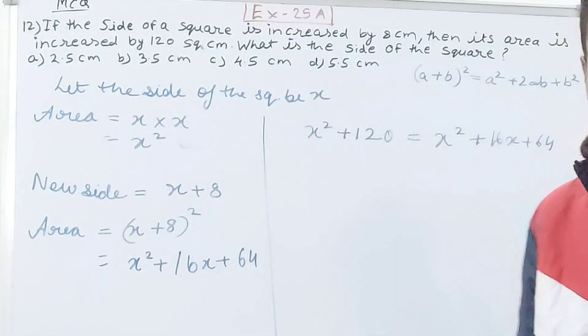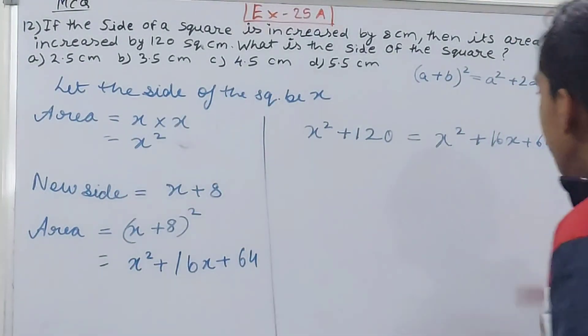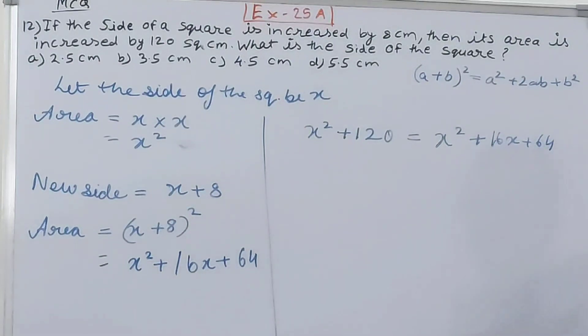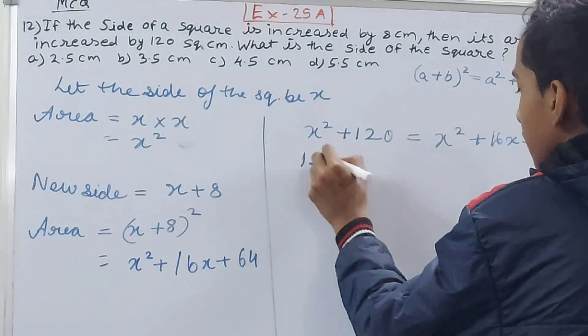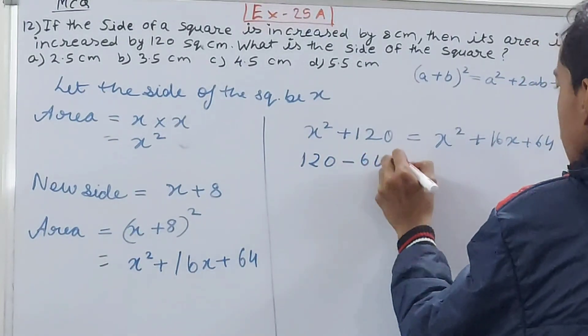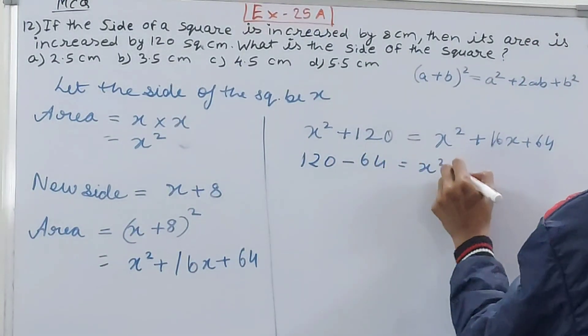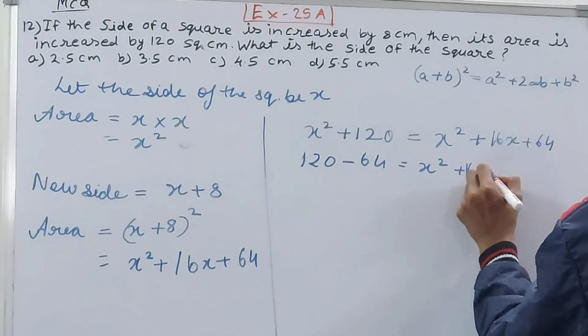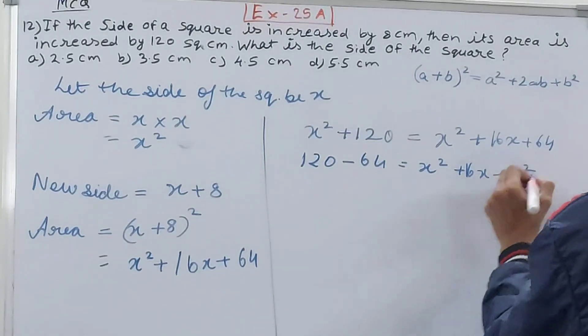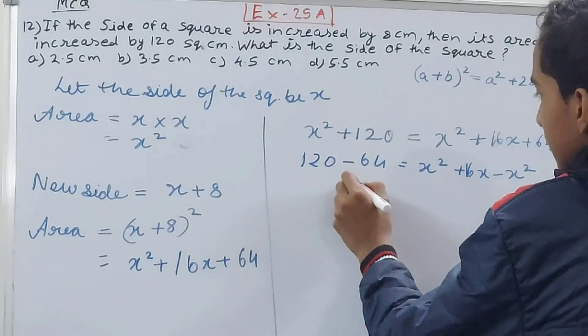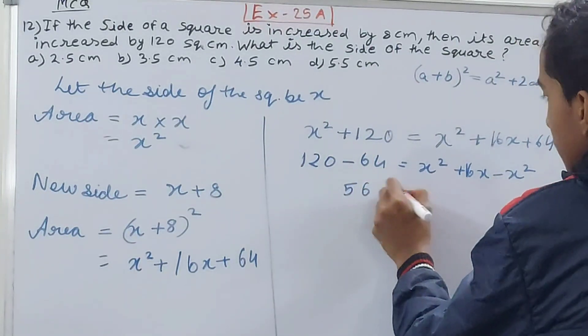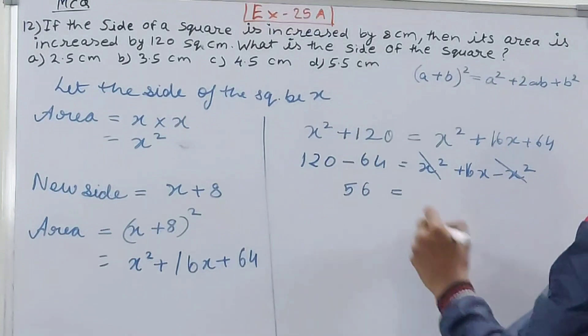So what I'll do is take the x to one side and the numbers to the other side. So I will have 120 minus 64 equals x squared plus 16x minus x squared. So 120 minus 64 is 56 equals x squared plus 16x minus x squared.